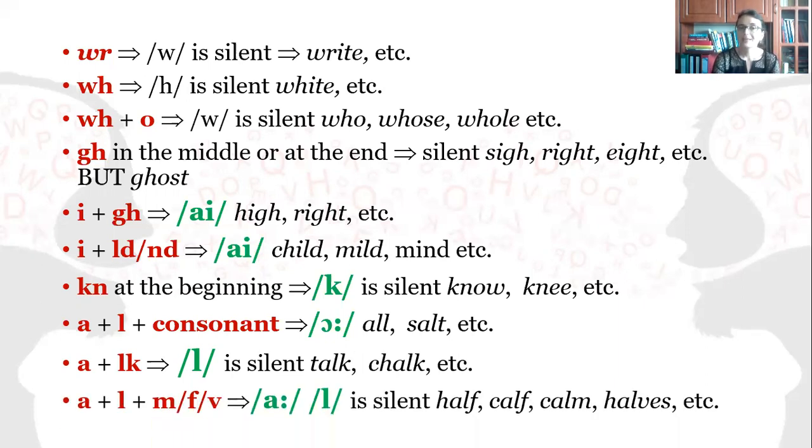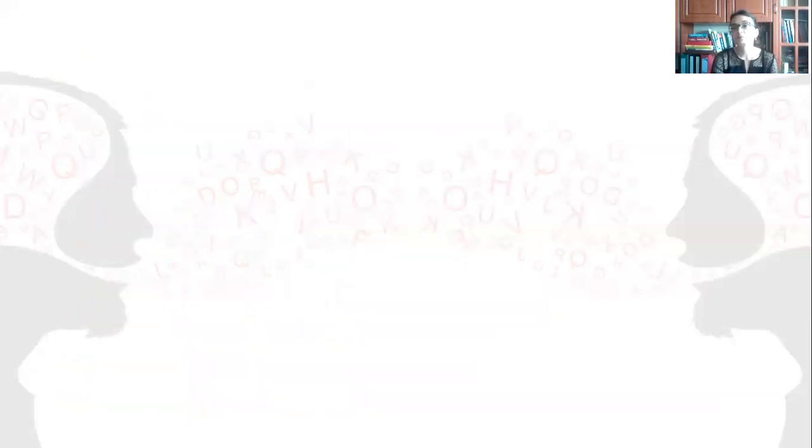A plus L plus M or F, the L is going to be pronounced as ah or is silent, and we have half, cough, calm, house.